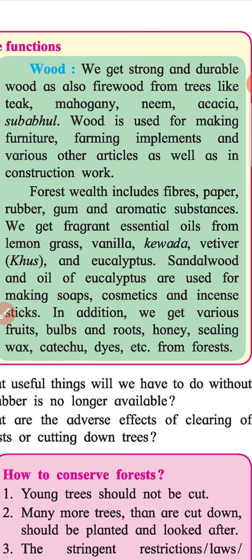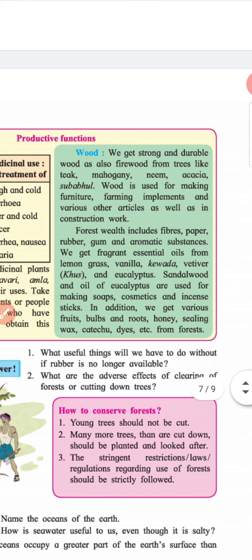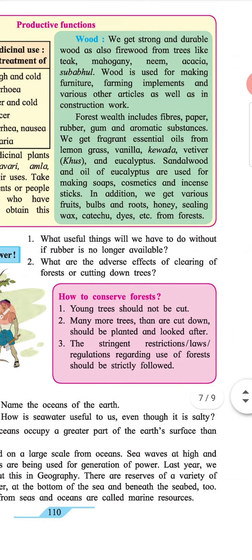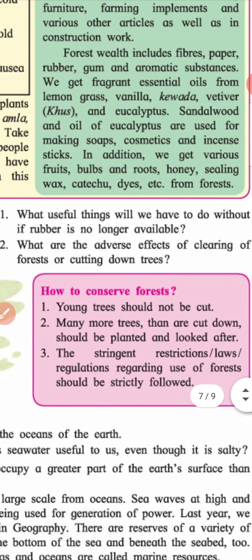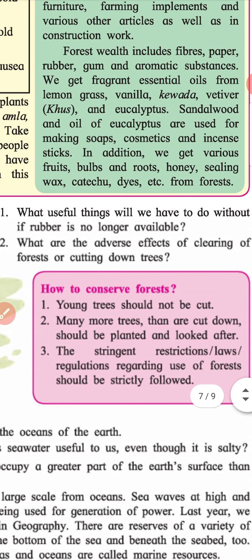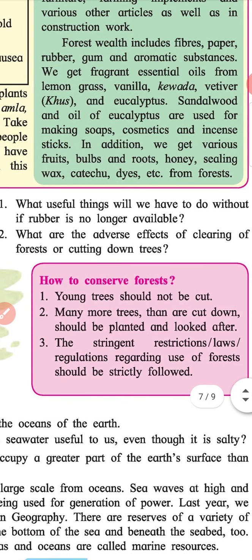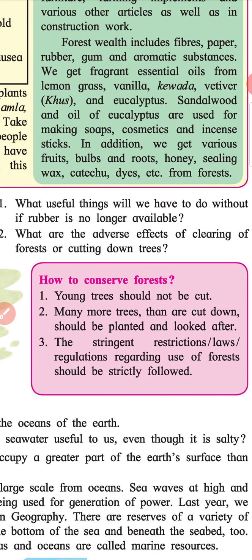In addition, we get various forest products — bulbs and roots, honey, sealing wax, dyes, etc. — from the forest. Use your brain power: What useful things will we have to do without if rubber is no longer available? What are the adverse effects of clearing of forests or cutting down trees?